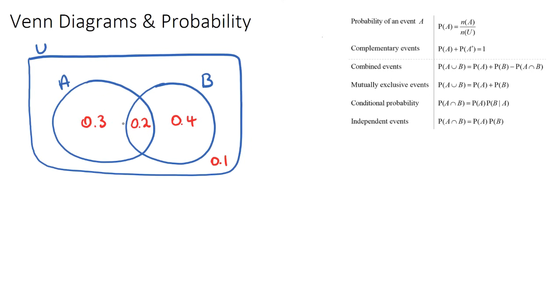Now these red numbers, they are our probabilities and these need to add up to one inside of our sample space such that we have a proper Venn diagram question. Here are some formulas that are given in your formula booklet and we'll look at those as we go across.